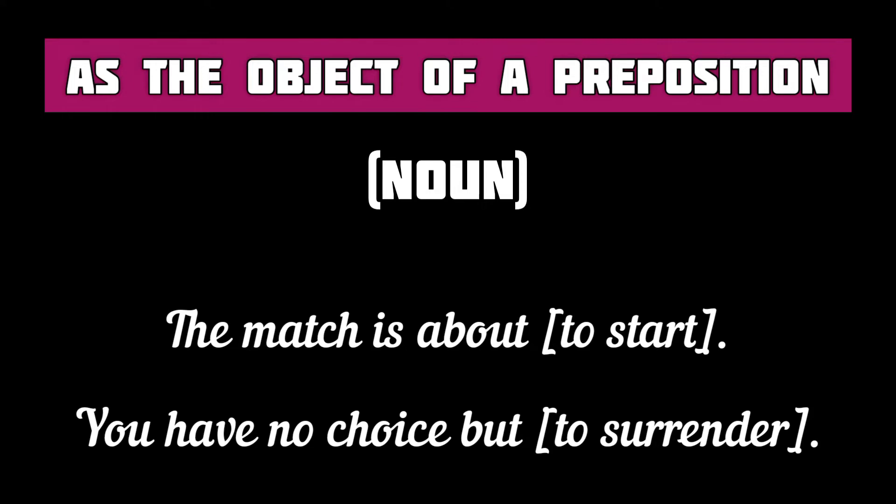The infinitive may also be used as the object of a preposition — it is also a noun here. For example: 'The match is about to start.' 'You have no choice but to surrender.' In these two sentences, 'to start' and 'to surrender' are the objects of the prepositions 'about' and 'but' respectively.